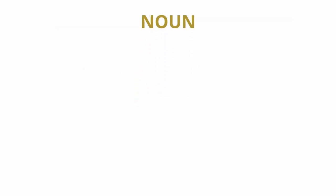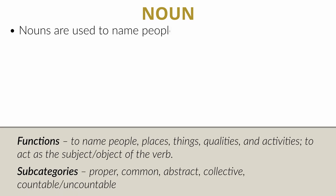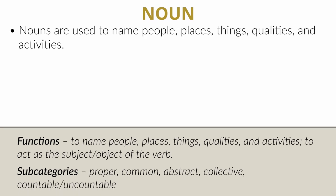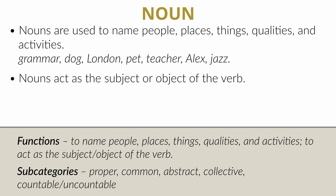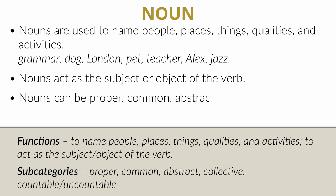Noun. Nouns are used to name people, places, things, qualities and activities. For example: grammar, dog, London, pet, teacher, Alex, jazz. Nouns act as the subject or object of the verb. Nouns can be proper, common, abstract, collective, countable or uncountable.